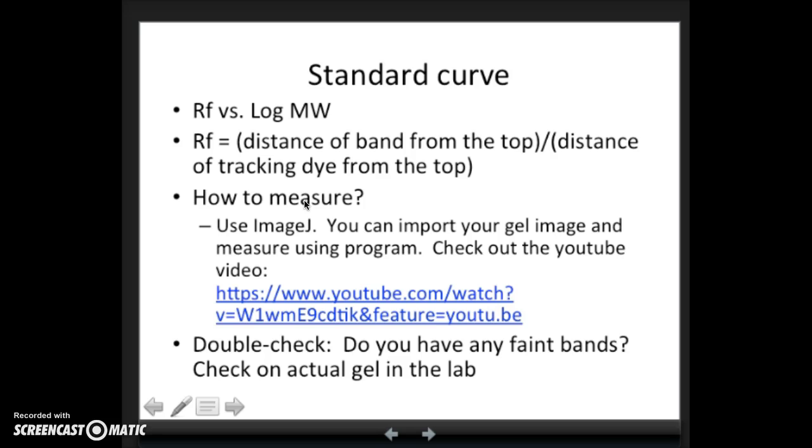How do you measure each band you're interested in? One way to do that might be to use a program called ImageJ. Some of you used this in Bio 105 when you're working on projects. It's a free program and it's pretty intuitive and easy to use. Dr. Lankowski has a YouTube video posted. You can quickly go through and actually use the program to measure each lane, each band. That's an accurate way of doing that.